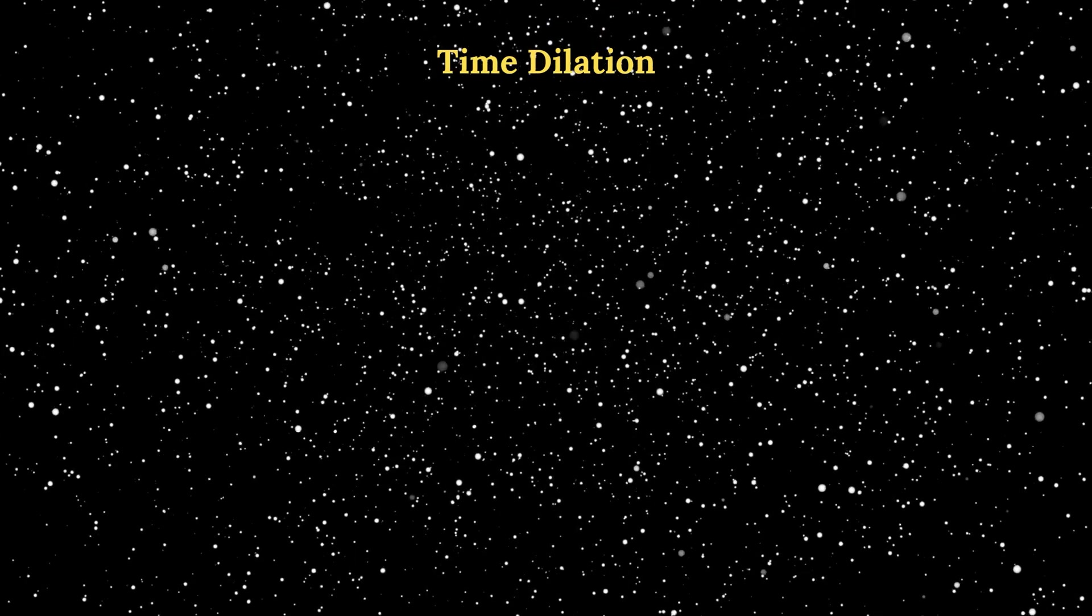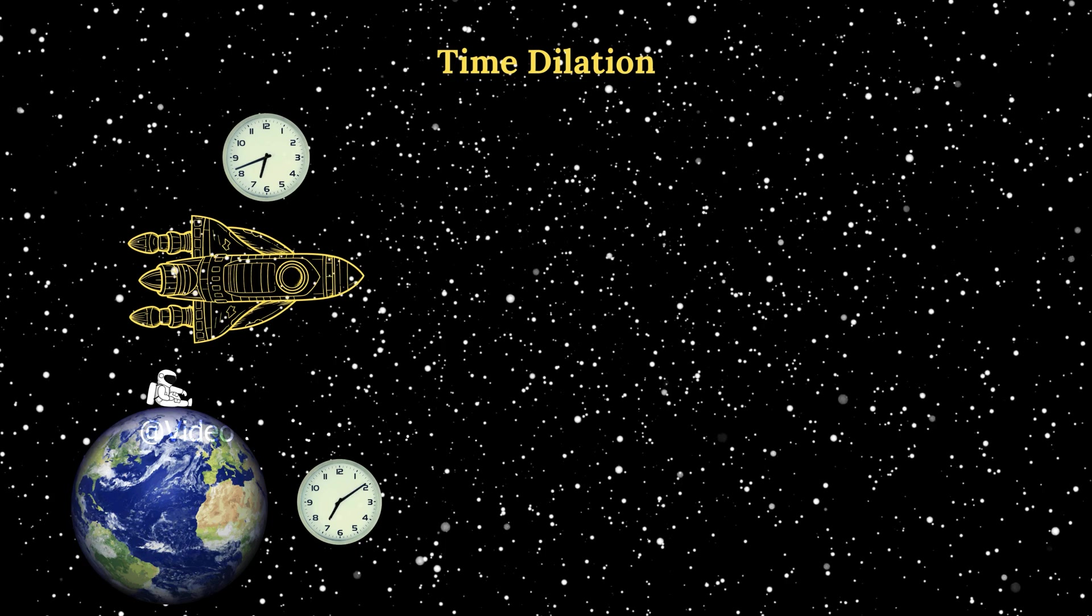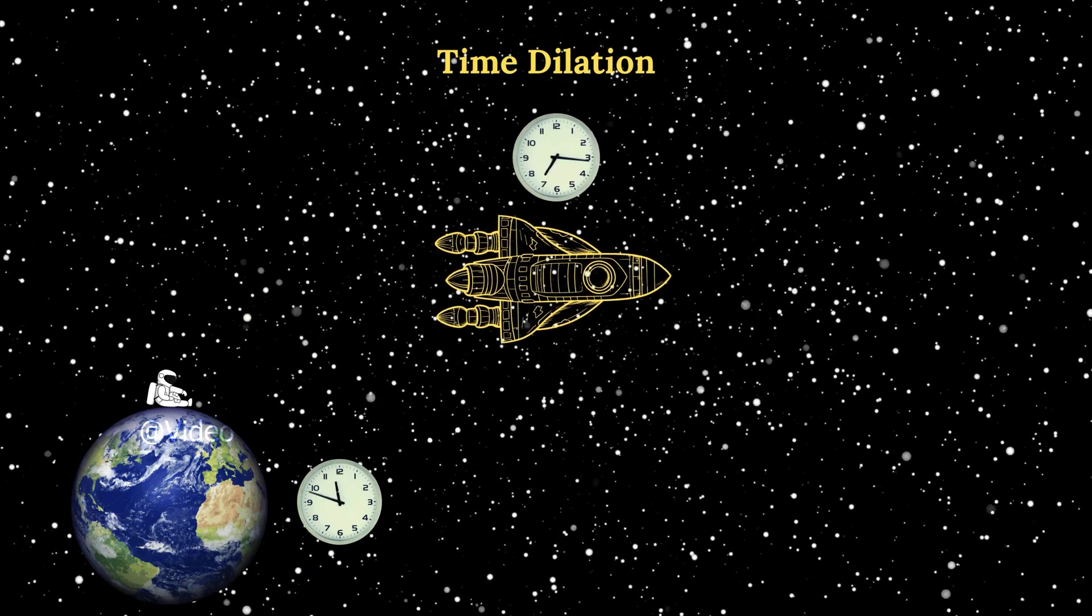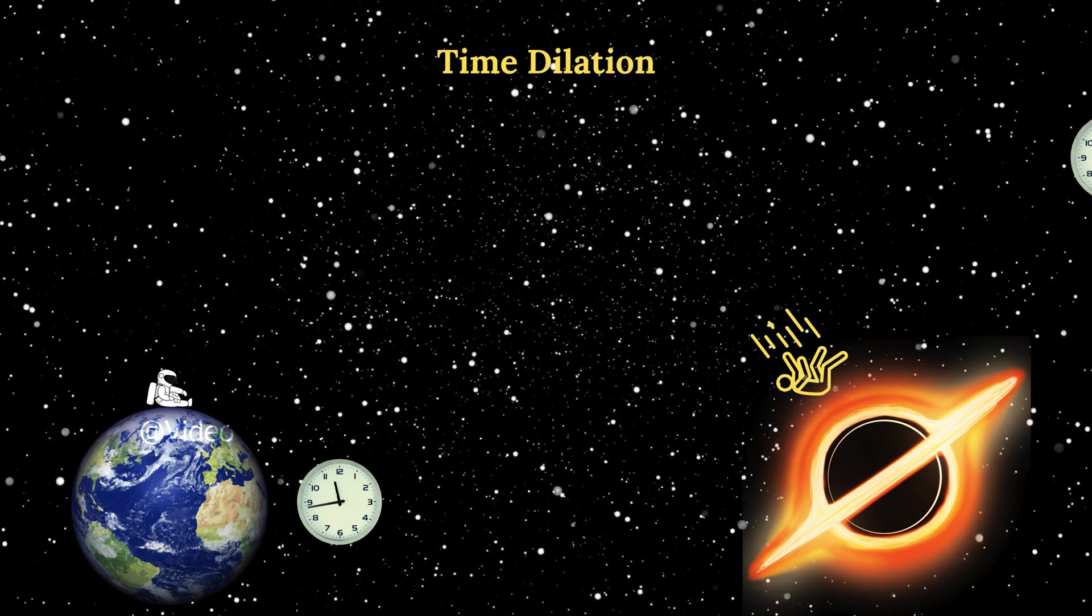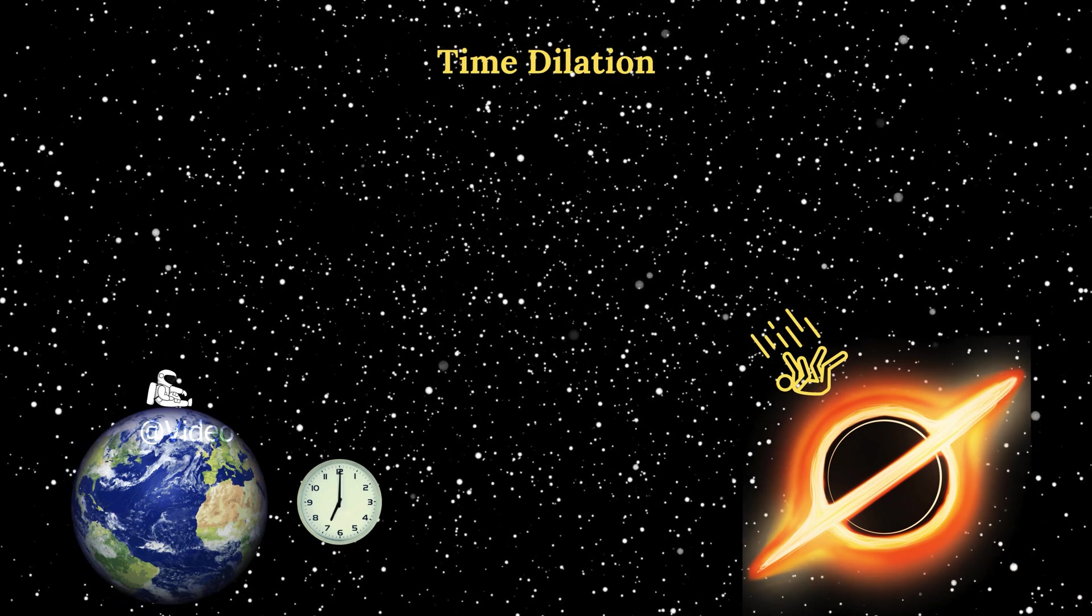For example, if you are on a spaceship that is moving very fast, your clock will tick slower than a clock on Earth. And if you are near a black hole, your clock will tick slower than a clock far away from the black hole.